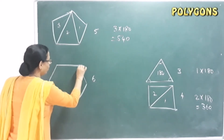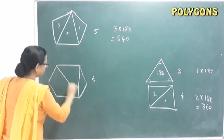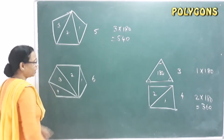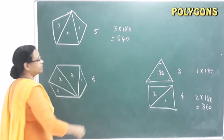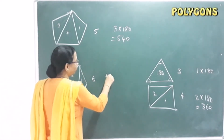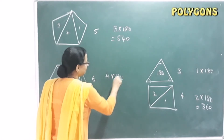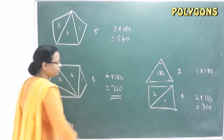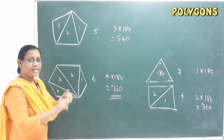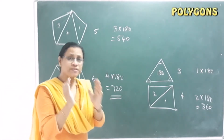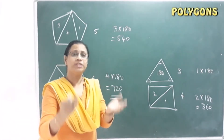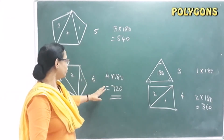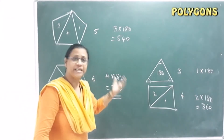Look at this: one, two, three — and one, two, three, four. That gives four triangles, which means 4 × 180. That is equal to 720 degrees. If we add one more side, we add one more triangle, adding another 180 degrees.